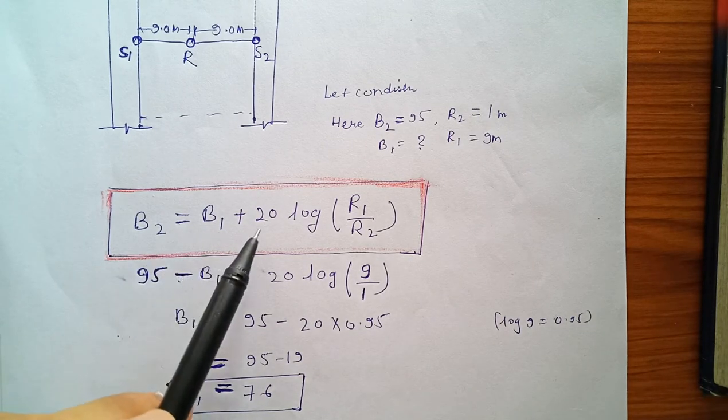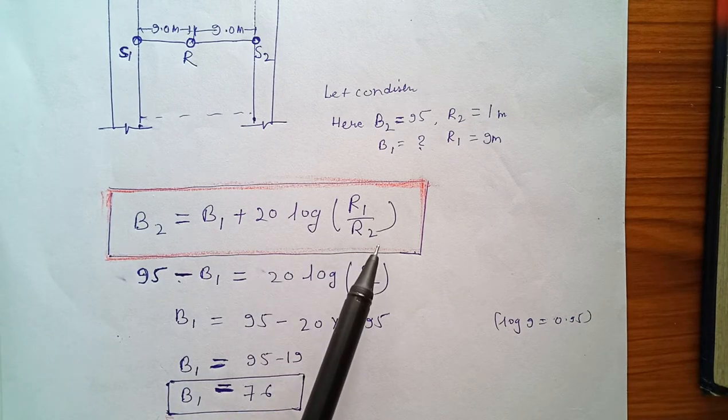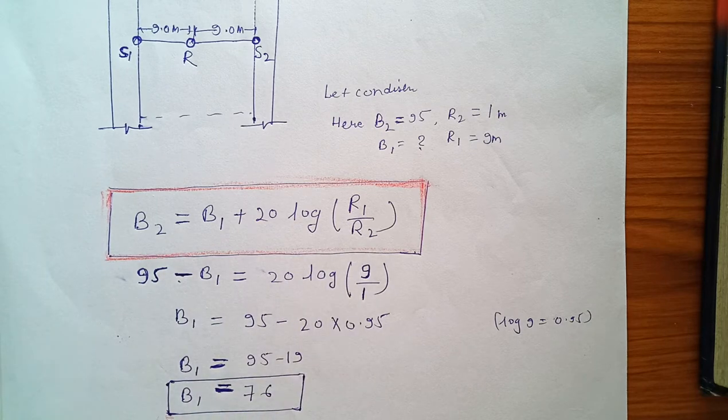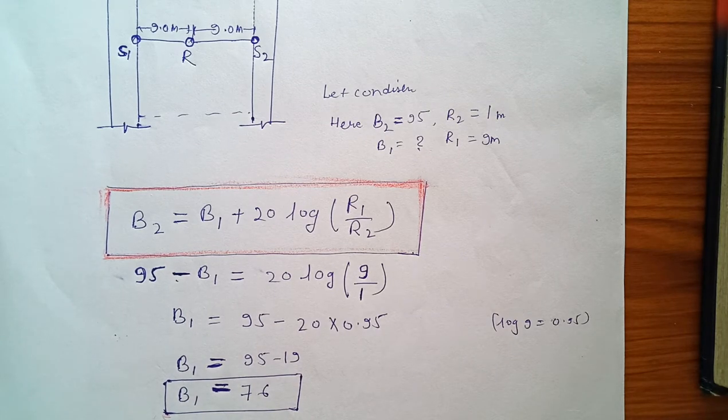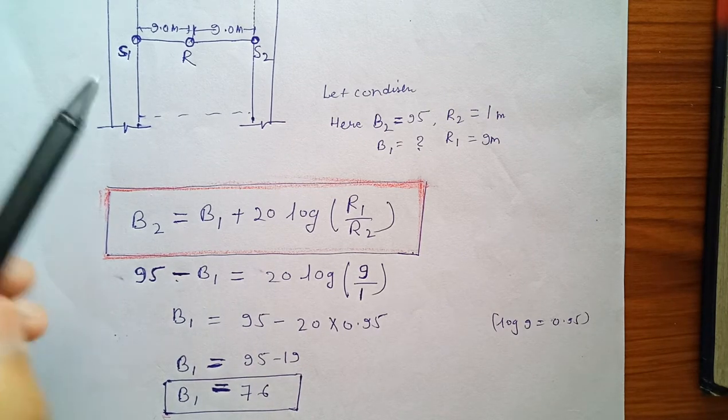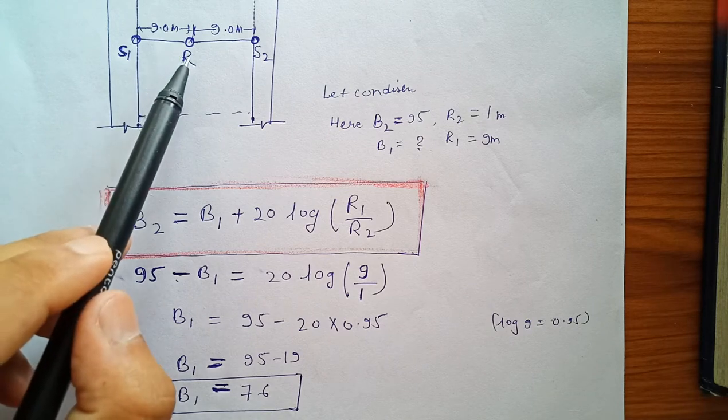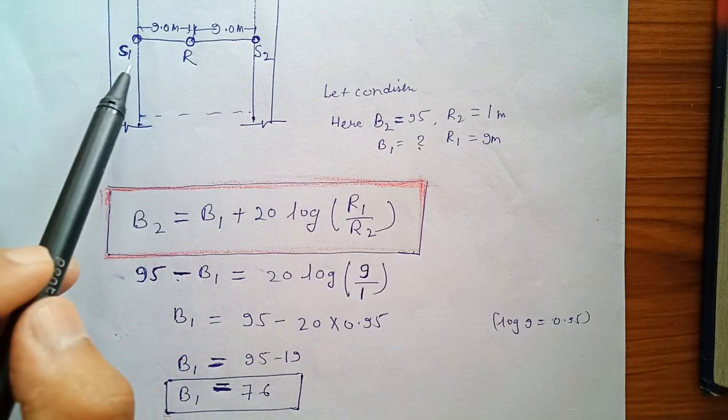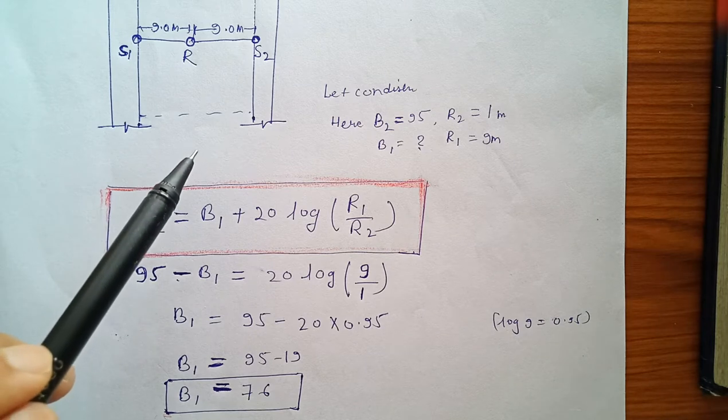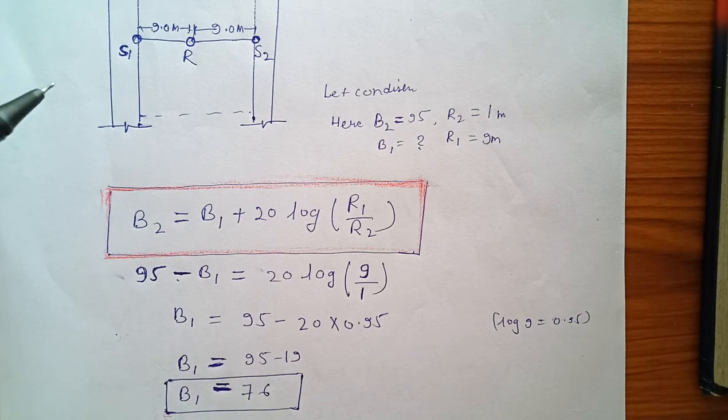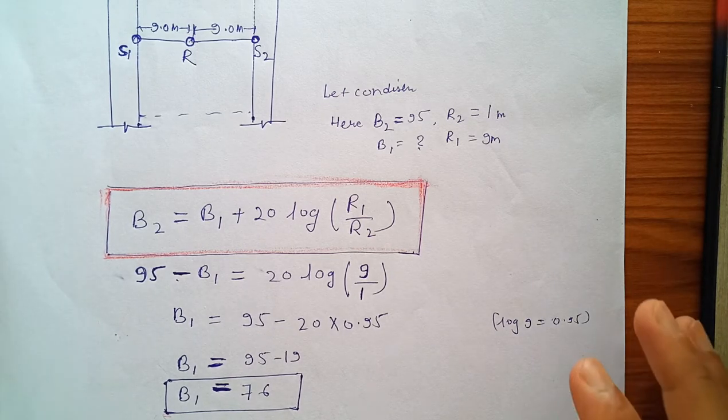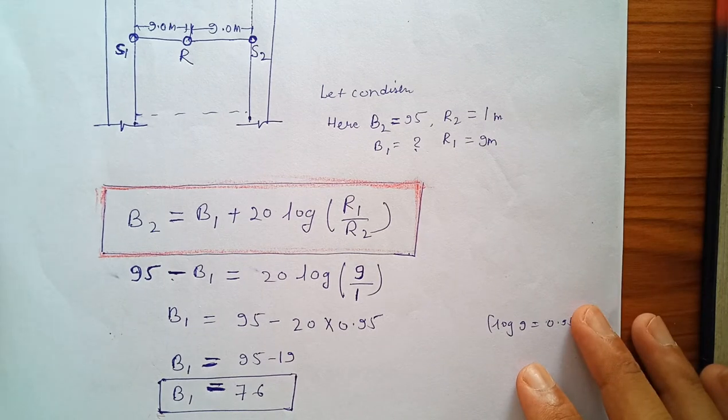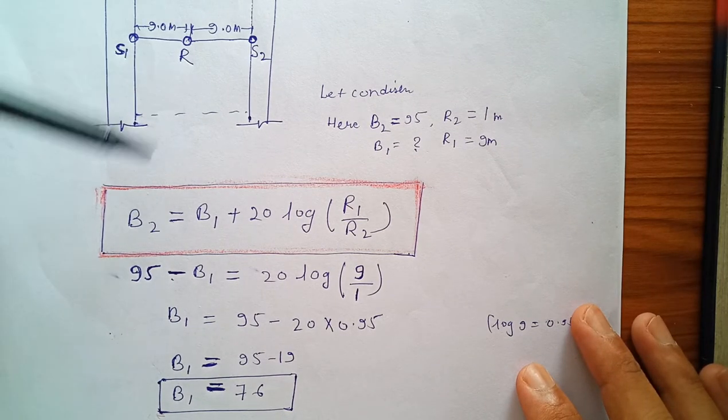Here a simple formula is used: L2 equals L1 plus 20 log(r1 over r2). This formula is derived from the base formula of acoustics. If any location is receiving sound from two sources, our human ear can differentiate up to three decibel of sound level, so here we will consider only 95 decibel in the equation.